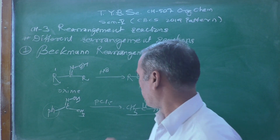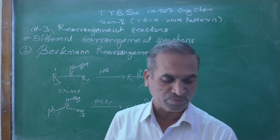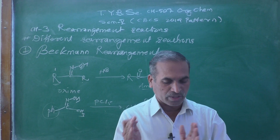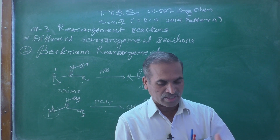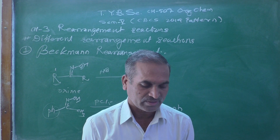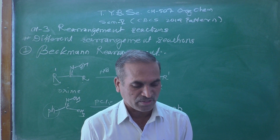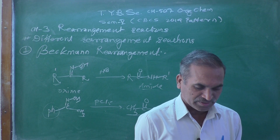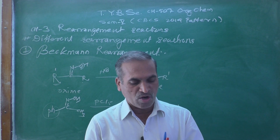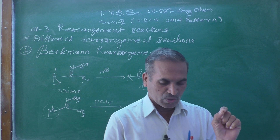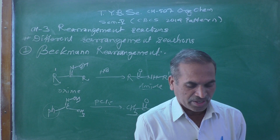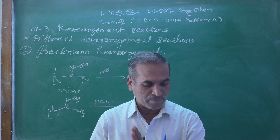With PCl₅ or concentrated H₂SO₄, the phenyl group migrates to give acetanilide in the case of acetophenone oxime — the isomer in which the phenyl group is anti. The migrating group involved in this 1,2-alkyl or aryl shift migrates with retention of its configuration.